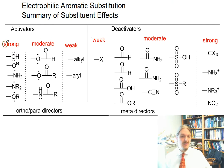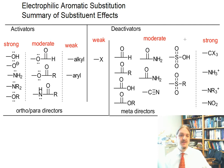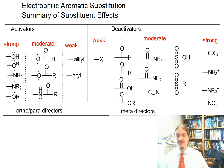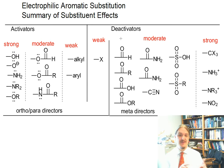The categories go: strong activators, moderate activators, weak activators, weak deactivators, moderate deactivators, and strong deactivators. In the sequence of videos on using this information for synthesis purposes, we'll come back and revisit this table to help us understand what might happen when we have multiple substituents, and we need the categories in this particular order.